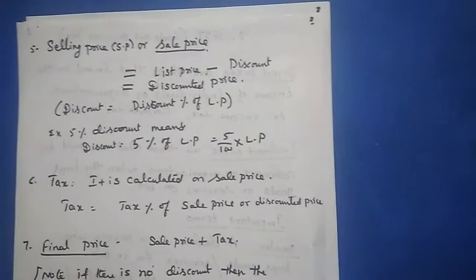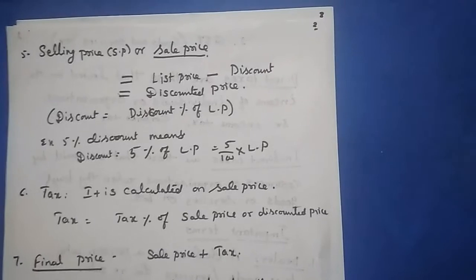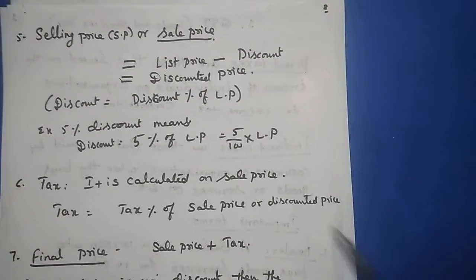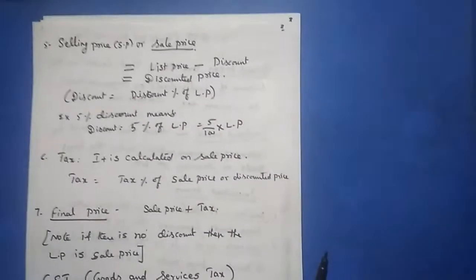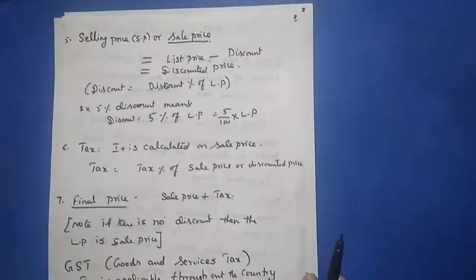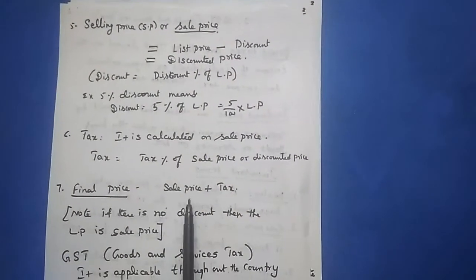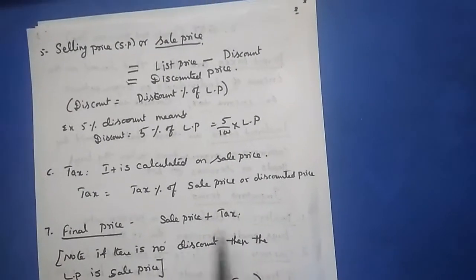The next term is tax. It is calculated on the sale price. If there is no discount, you calculate it on the list price. If there is a discount, you first subtract the discount and then calculate the tax. The final price equals sale price plus tax, or list price plus tax if there is no discount.